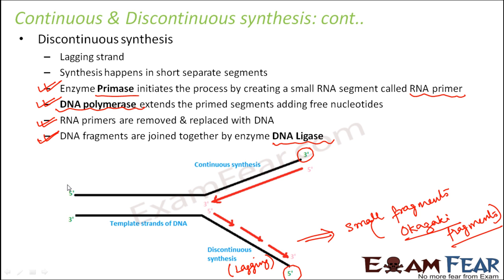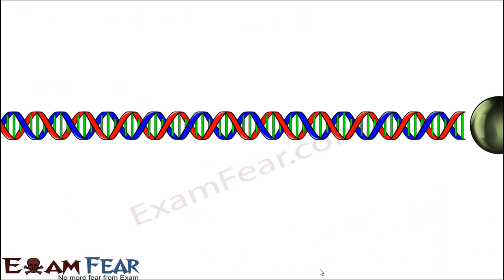From the parental DNA, you get one copy of DNA on one side and one copy on the other. That is how the process of discontinuous synthesis takes place. Let us have a look at the animation for better understanding — please pay attention because this is very important.